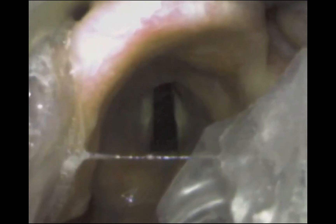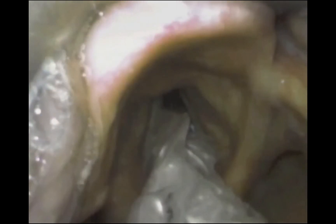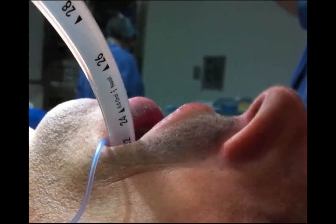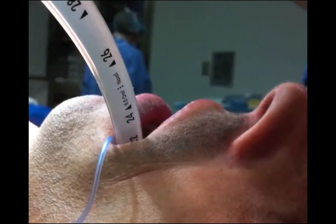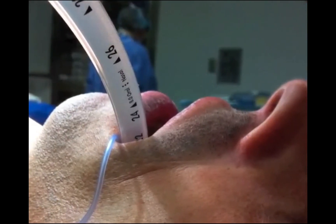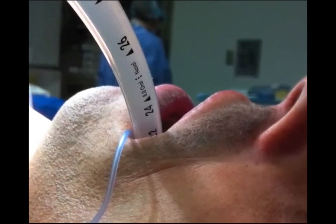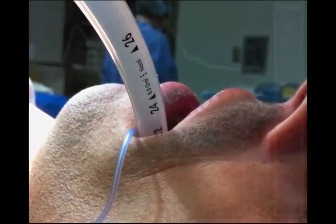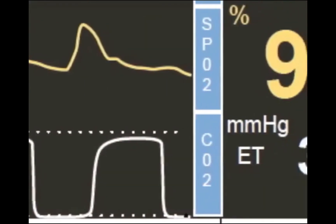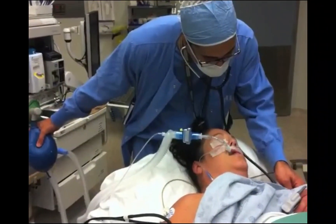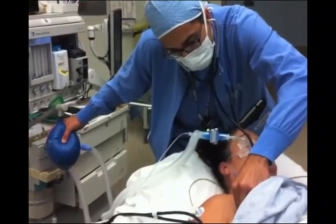Once glottic exposure is achieved, the tracheal tube is grasped at the 18 to 20 cm marking and advanced into the right side of the patient's mouth towards the glottis. The tube is passed between the vocal cords into the trachea. If a stylet has been used, it is removed prior to further advancement. The cuff of the tracheal tube should be positioned just past the vocal cords. In adults, the normal distance of a correctly positioned endotracheal tube is typically 20 to 24 cm at the lips. The laryngoscope is then removed, the tracheal cuff inflated, and end-tidal CO2 return is used to confirm tracheal placement. Bilateral auscultation is performed to confirm air entry to both lung fields.